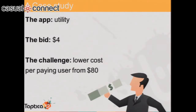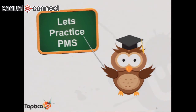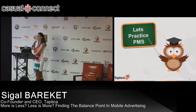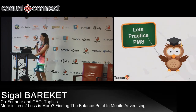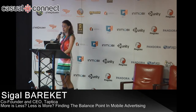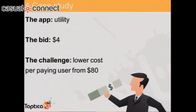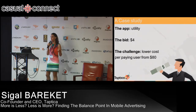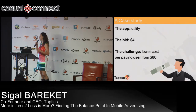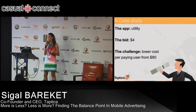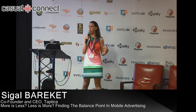Now let's practice this by reviewing a real client case study from Taptica. I can't reveal the client's name, but they were kind enough to allow me to use actual numbers. The client was a utility app with an initial bid of $4, looking to acquire more installs. The challenge was lowering the cost per paying user — when they came to us, they were paying $80 for every paying user. Let's see how PMS helped them.